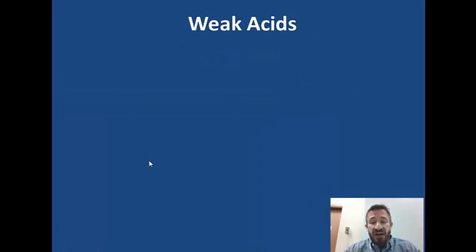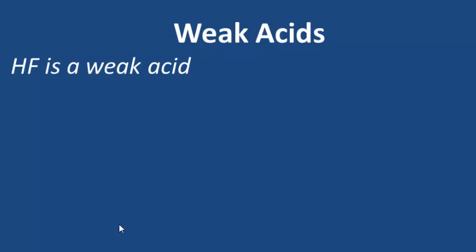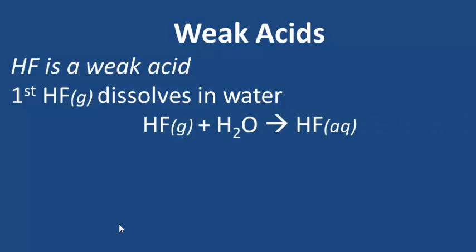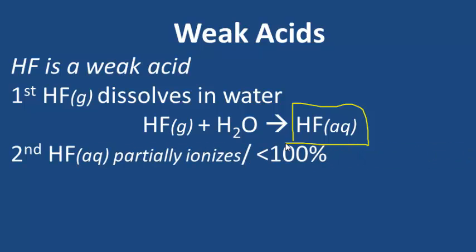What is a weak acid? A weak acid is a little bit different. HF — hydrogen fluoride — is a weak acid. The first step is exactly the same: hydrogen fluoride dissolves in water. Dissolves just means when you put it into water, it mixes. So hydrogen fluoride gas plus water forms aqueous hydrogen fluoride. The second step is what's different: HF only partially ionizes — it ionizes less than 100%.